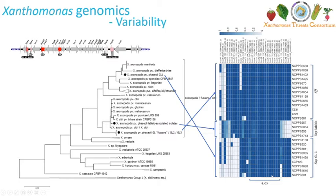You can see the type three secretion system repertoire here. There is a core secretome represented in all of them, which could be taken as necessary for infecting bean, but then you've got a variable section which is responsible for the host specificity on the different sorts of bean — which we'll also be looking into. This is a schematic of the type three secretion system published in a recent paper. It was introduced into a non-pathogenic strain of Xanthomonas, which was then shown to be pathogenic, demonstrating that the type three secretion system can be very important in pathogenicity in Xanthomonas.